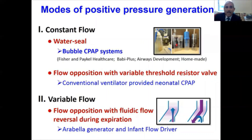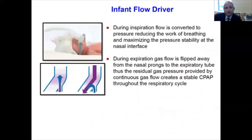In the variable flow system, gas is entrained during inspiration to maintain stable pressures, and during expiration the expiratory flow is diverted via a separate fluidic flip-flop valve. The Arabella generator and the Infant Flow Driver are typical examples of this system.